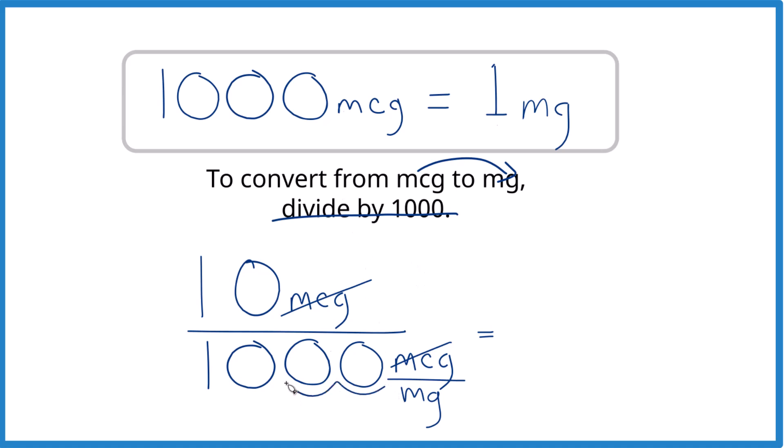So 1, 2, 3 up here. 1, 2, 3. We end up with, we could add our other zero if we wanted there. And remember, we have MG. That's what's left, milligrams. So we know we did it right because the units cancel out.